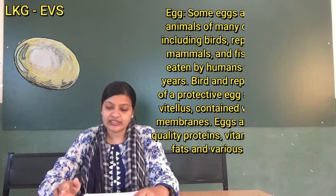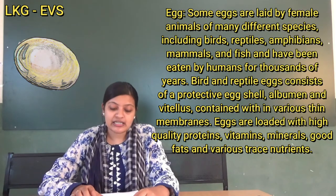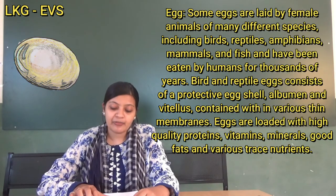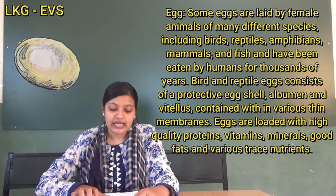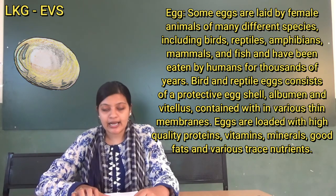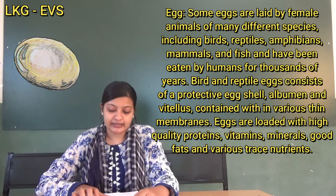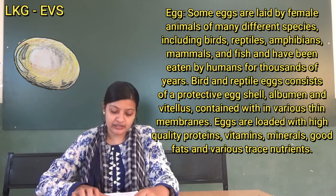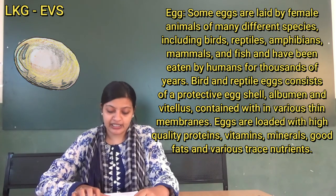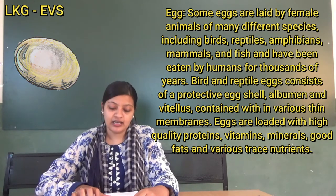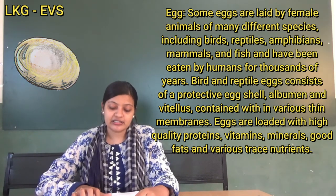Next, we will go with the letter E. Egg. Eggs laid by female animals of many different species including birds, reptiles, amphibians, mammals, and fish have been eaten by humans for thousands of years. Bird and reptile eggs consist of a protective eggshell, albumen, and vitellus, contained within various thin membranes.